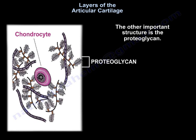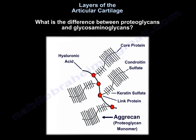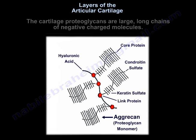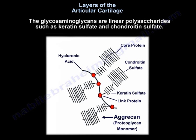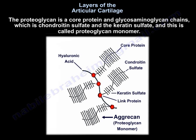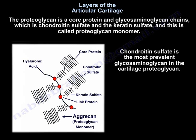The other important structure is the proteoglycan. The cartilage proteoglycans are large, long chains of negatively charged molecules. Glycosaminoglycans are linear polysaccharides, such as keratan sulfate and chondroitin sulfate. The proteoglycan is a core protein with glycosaminoglycan chains — chondroitin sulfate and keratan sulfate — and that is called a proteoglycan monomer. Chondroitin sulfate is the most prevalent glycosaminoglycan in the cartilage proteoglycan.